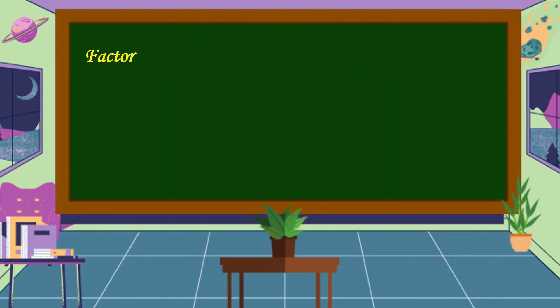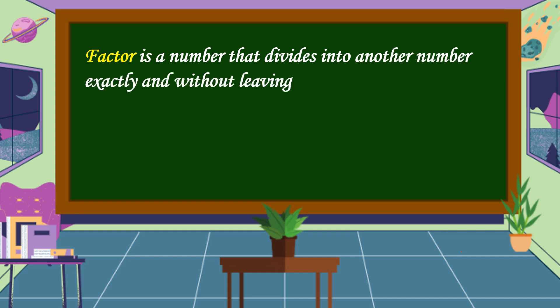What is a factor? A factor is a number that divides into another number exactly and without leaving a remainder. What are the factors of 8? The factors of 8 are 2, 4, and 8.